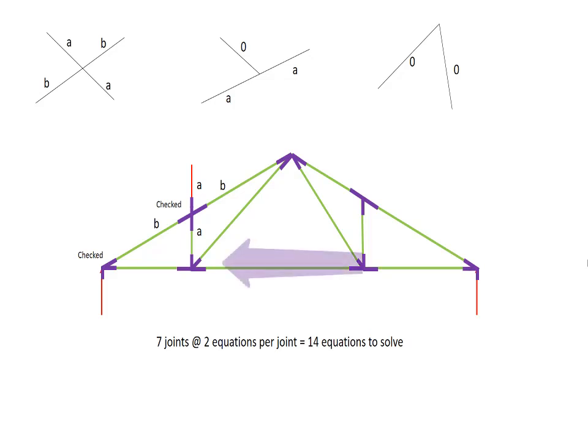Let's move down. The joint below doesn't look at all like any of the three diagrams. It does have two members in line with each other, but it has two other members coming in at different angles. That doesn't look like any of the other diagrams. We'll just label it as checked and say that that doesn't give us any information.